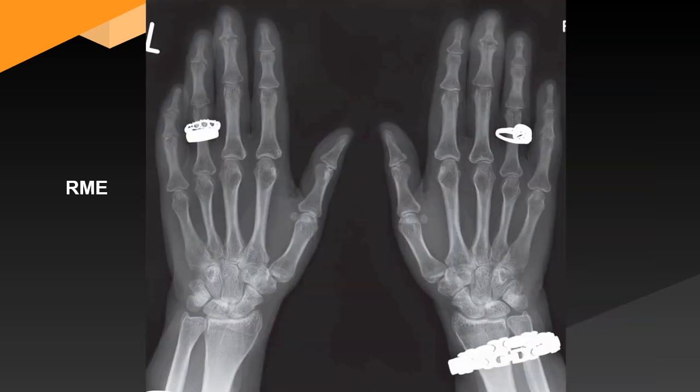These are dorsopalmar views of both hands. There is asymmetrical erosive polyarthritis involving the whole of the articular surfaces and affecting both right and left middle, ring and little fingers distal interphalangeal (DIP) joints, and also the left little finger proximal interphalangeal (PIP) joint. The right little finger PIP joint appears ankylosed.